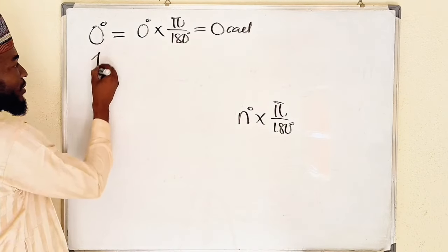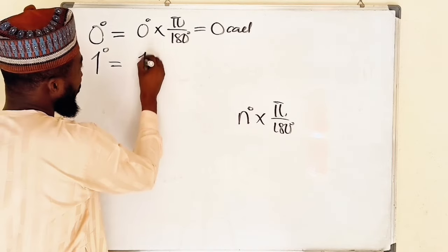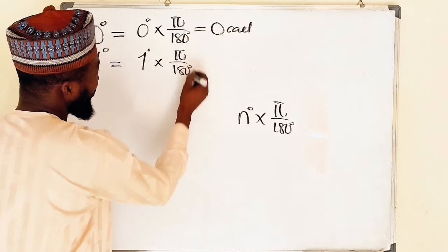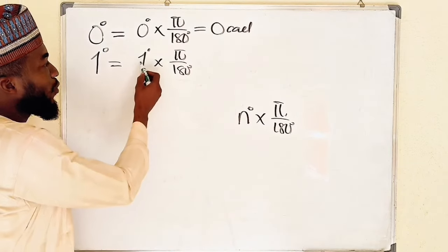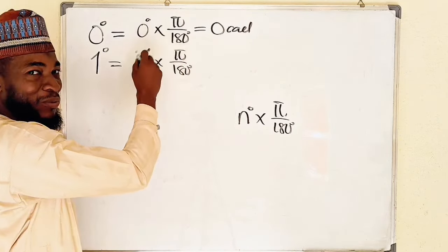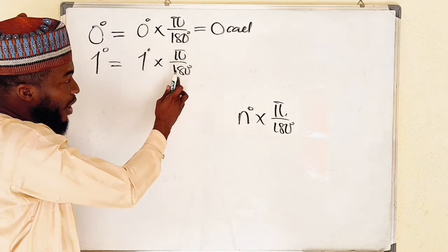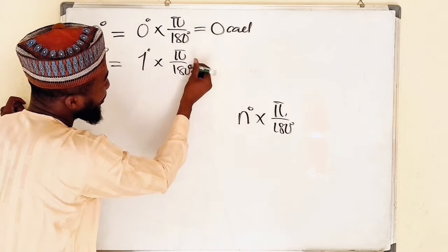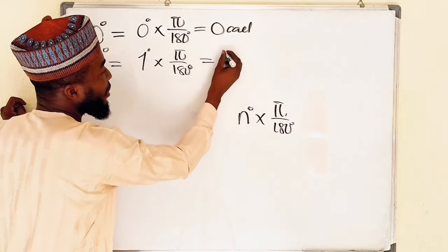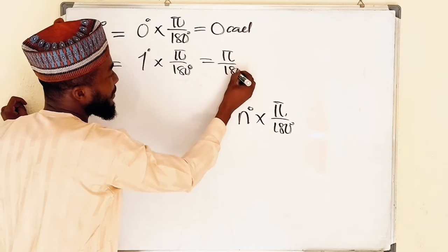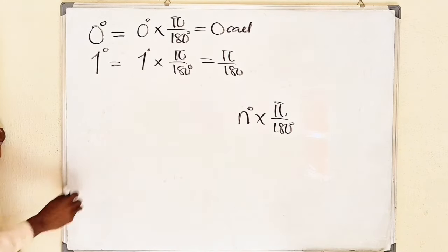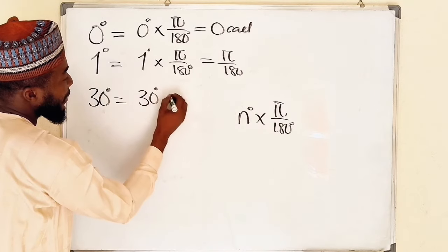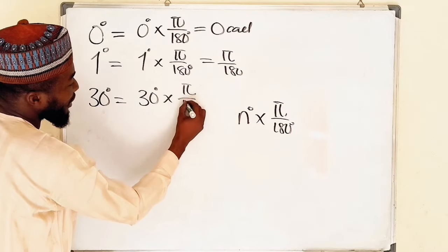If you have 1 degree, this is equal to 1 degree multiplied by π divided by 180 degrees. By multiplying, 1 degree times π is π, but the degree unit will cancel the degree in the denominator, and you have only π divided by 180 — without the degree symbol. So 1 degree equals π over 180.